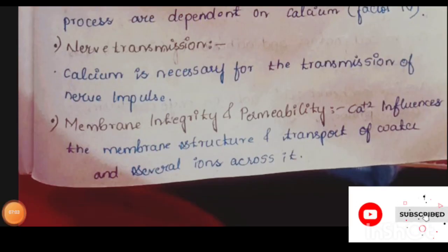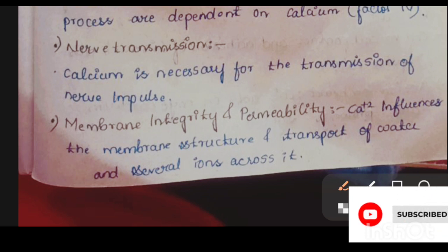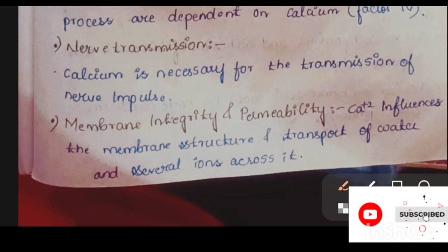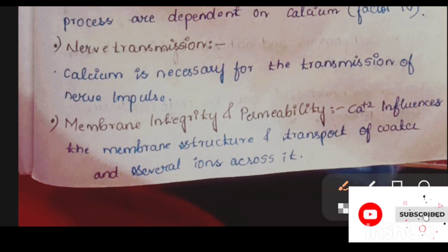The next function is nerve transmission. Calcium is also helpful in nerve transmission — any information from one nerve to another nerve can be transmitted by calcium. So calcium is necessary for the transmission of nerve impulses.